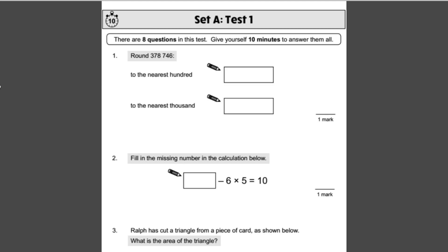The first question says round 378,746 to the nearest hundred. When rounding to the nearest hundred, we look at the hundreds column, which is this 7, and also look across to the tens column. If the tens column is 5 or above, we round up. If it's less than 5, we round down. In this case it's less than 5, so it would be 378,700.